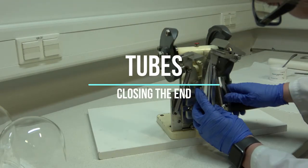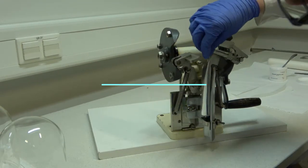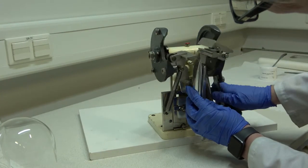The tube end closing machine needs to be set up so that the end of the tube just reaches the tops of the jaws.